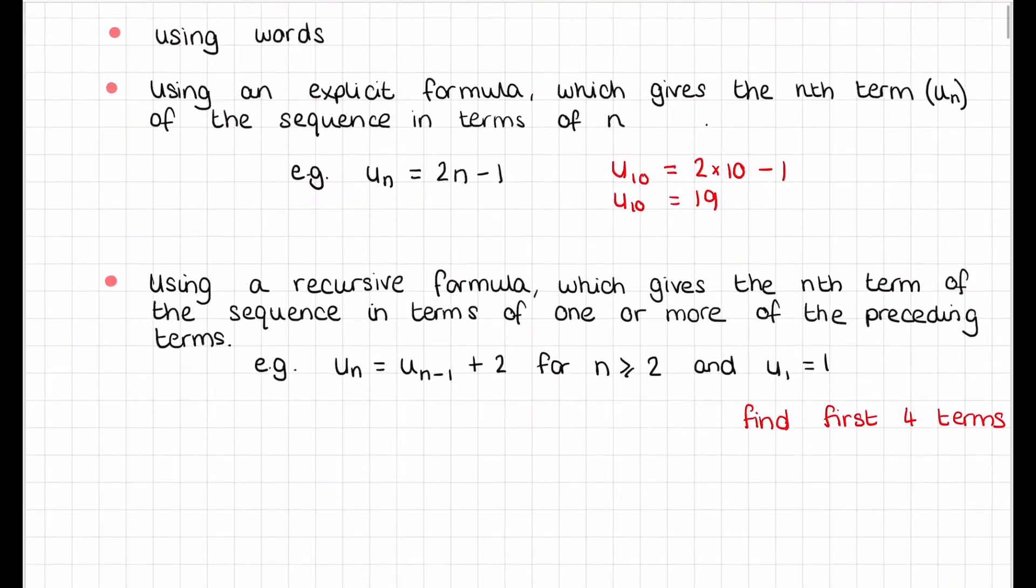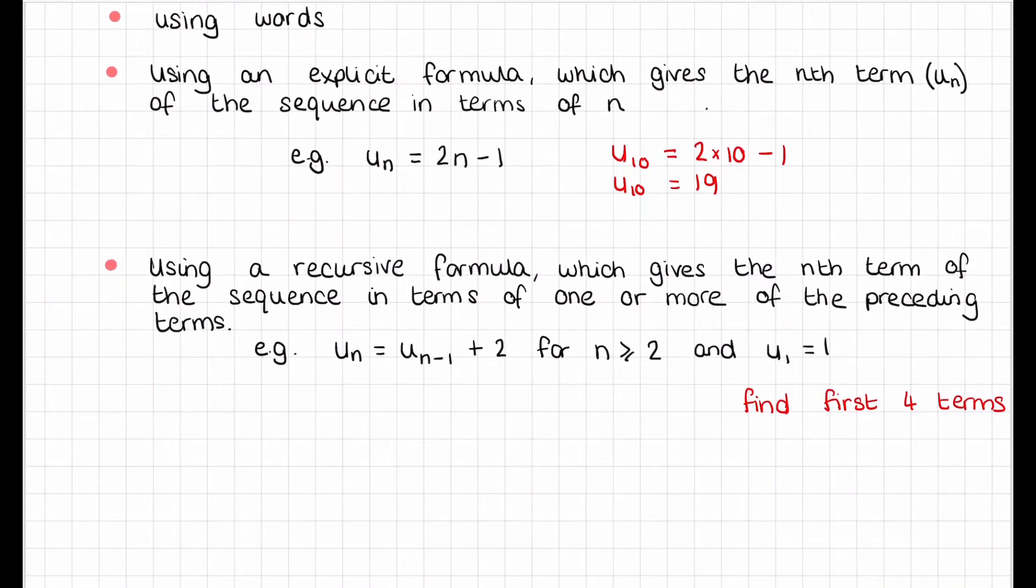For this example, I'll find the first four terms. We have un = u(n-1) + 2, where n ≥ 2 and u1 = 1.